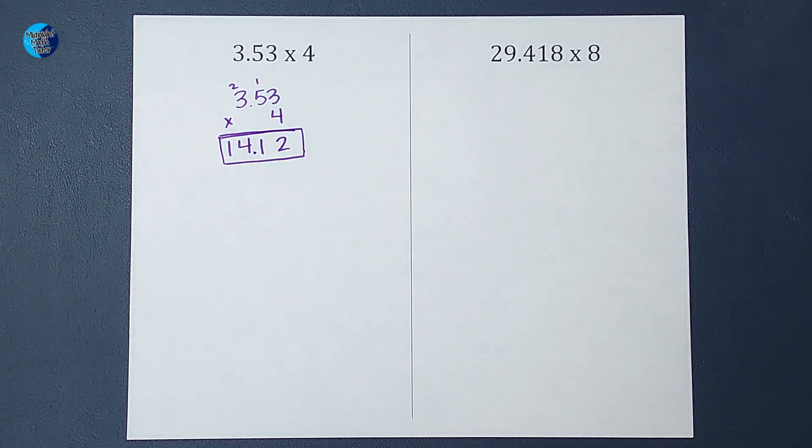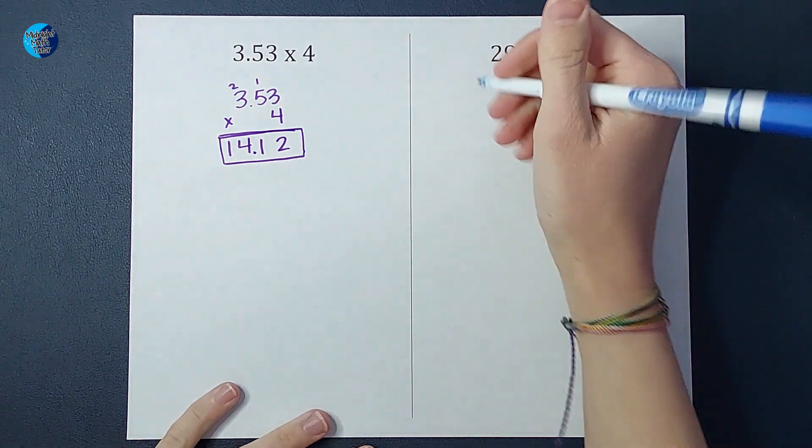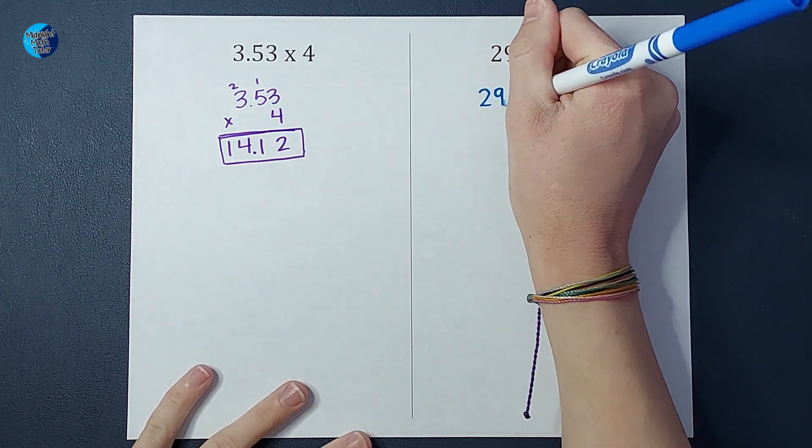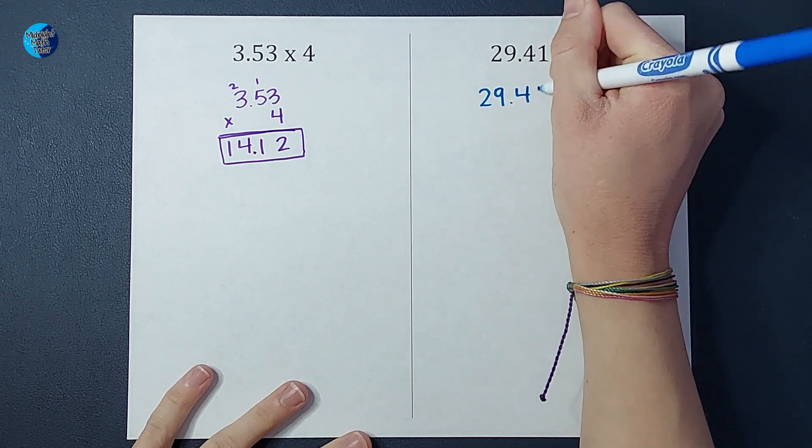We've got 29.418 times 8. Again, for a second I'm still going to write the decimal, but I don't have to worry about it really until the end.